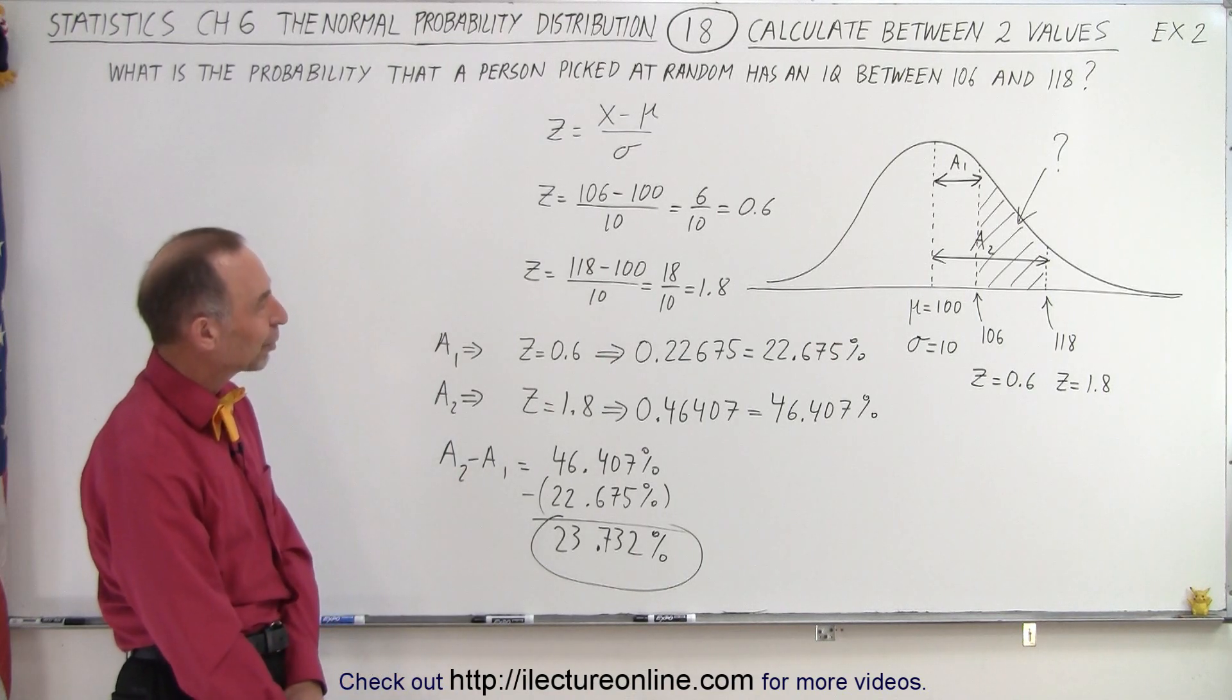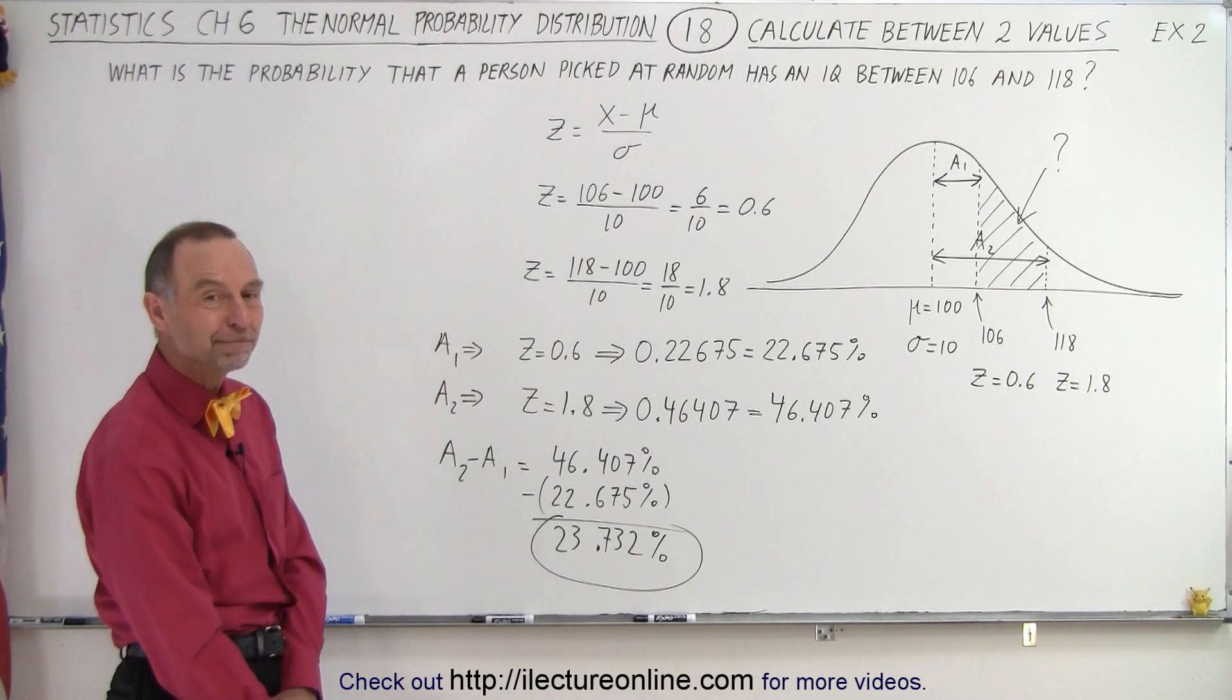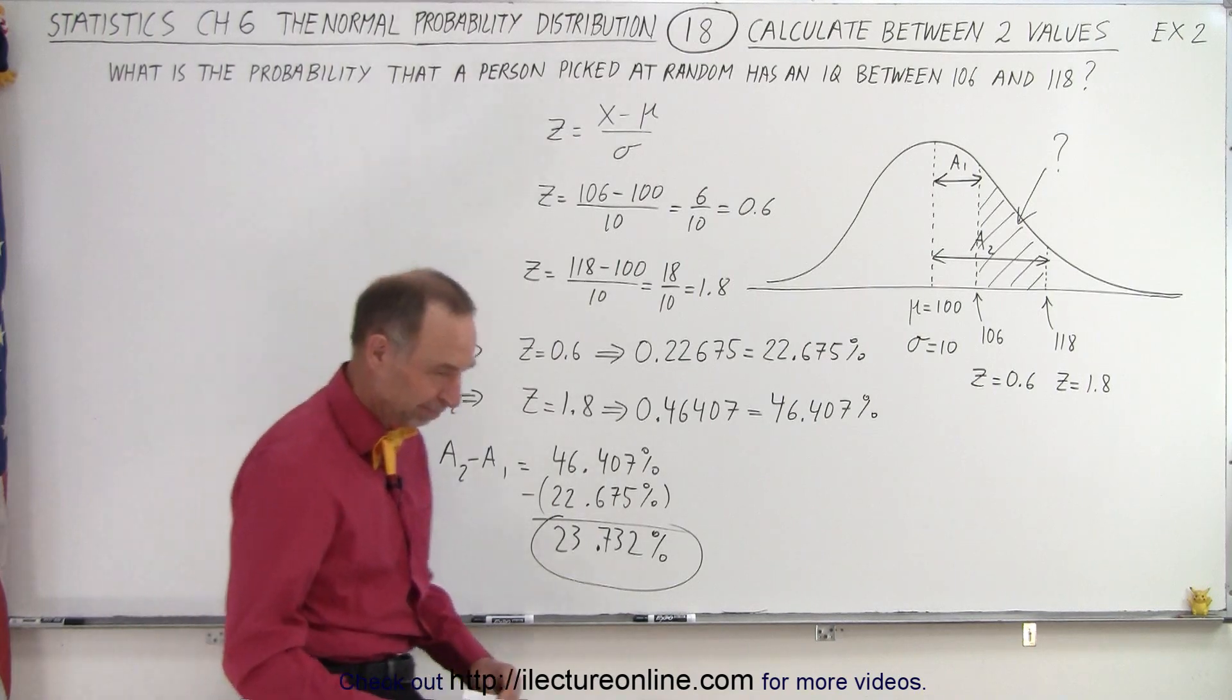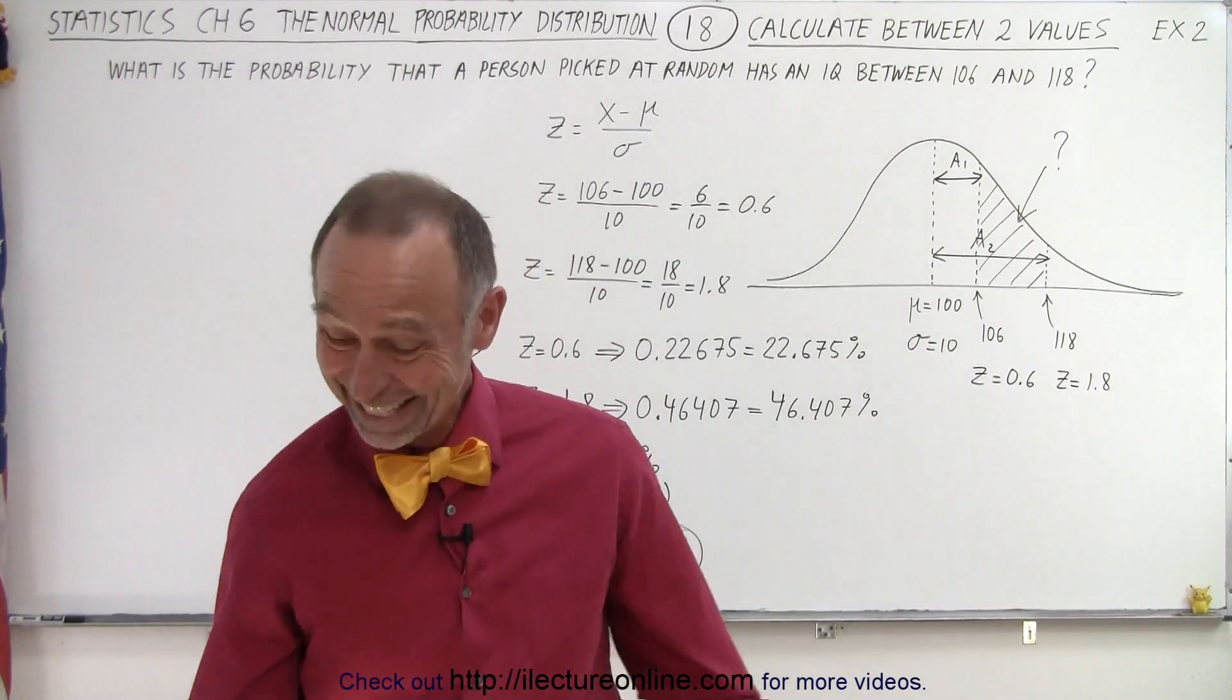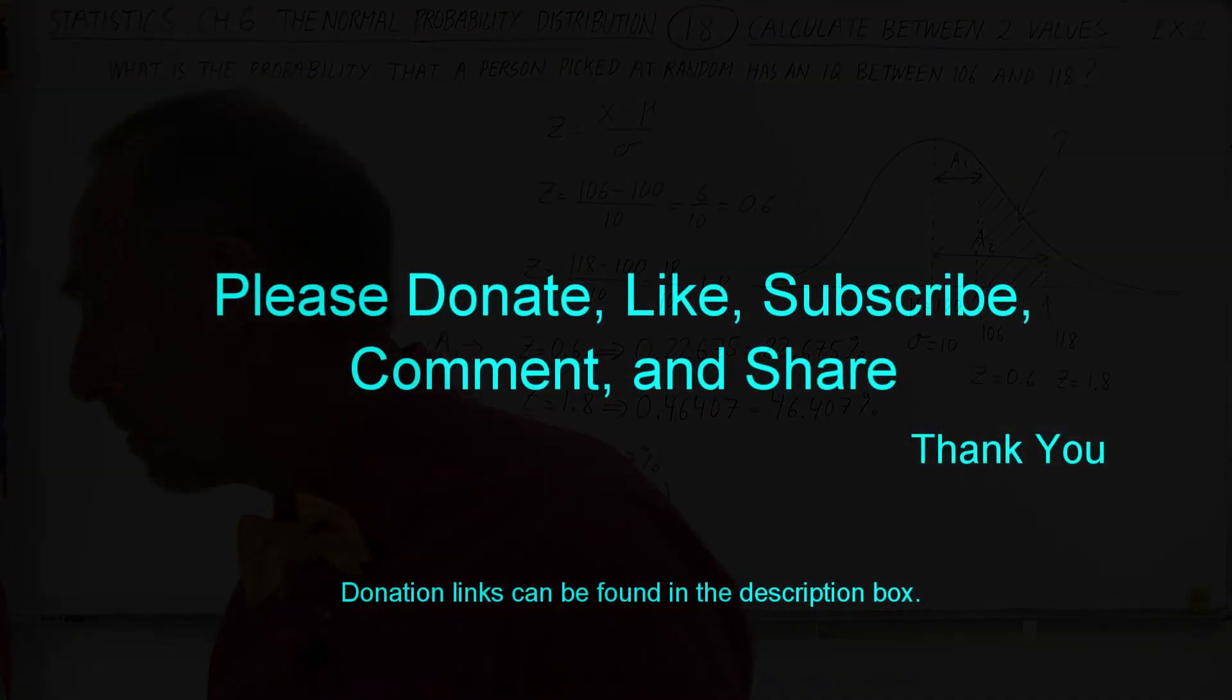Almost a quarter of people have IQs between 106 and 118. Seems generous. Hey it works.